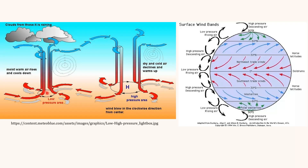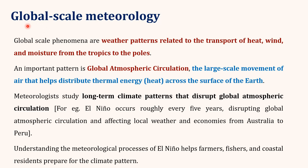The low pressure region is the area where moist, warm air rises and cools down, and the formation of cloud and precipitation occurs. While in high pressure regions, dry and cold air descends and as it moves near to the earth's surface it warms up, and the wind blows in a clockwise direction from the center. As seen in the image, we have low pressure regions at the equatorial belt and at 60 degrees north and south, while at 30 degrees north and south and at 90 degrees north and south, we have regions of high pressure where air descends toward the ground. This interplay of low and high pressure is responsible for the generation of wind, covered in global scale meteorology.